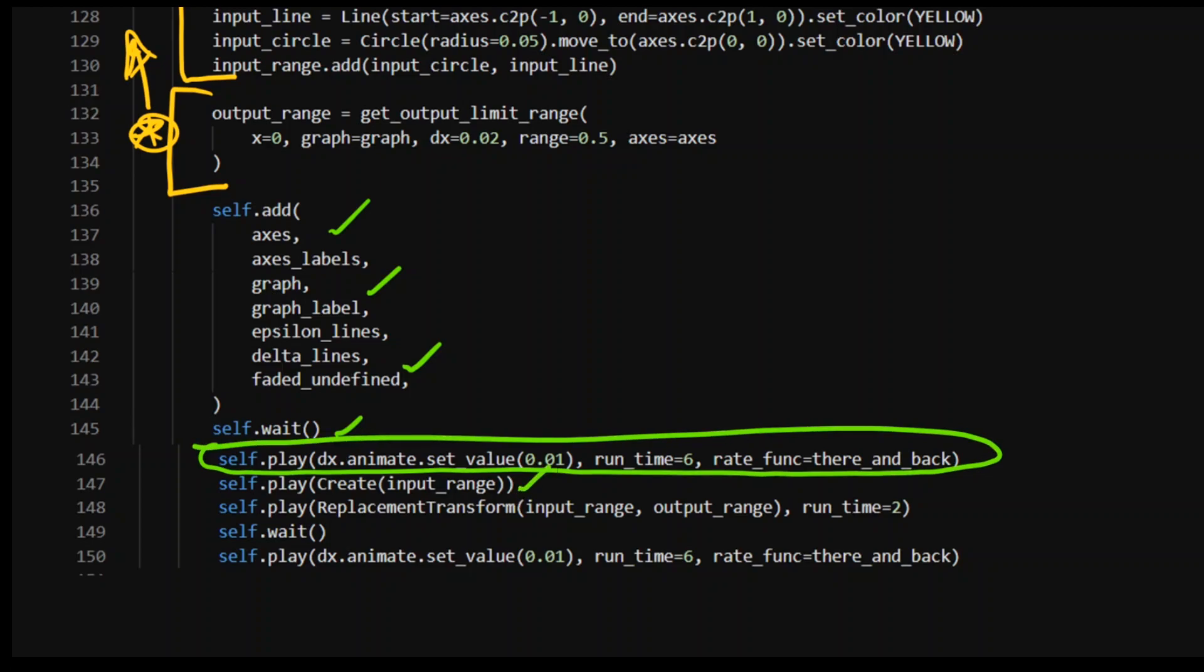Create the input range, and then transform it to be the output range so as if to say, well, does this input match that output range? And then go there and back again, just so we're really illustrating out, well, what is the limit for this particular function here, and does it exist? You know, with the, considering x from the left-hand side and x from the right-hand side.